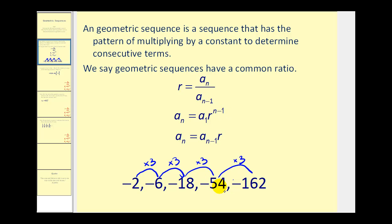To get the fourth term, we multiply the first term times three to the power of three, which again is n minus one. And this last formula states that if we want, say, a sub five, we can find it by multiplying a sub four times r. So to find any term, we can multiply the term before it times r.